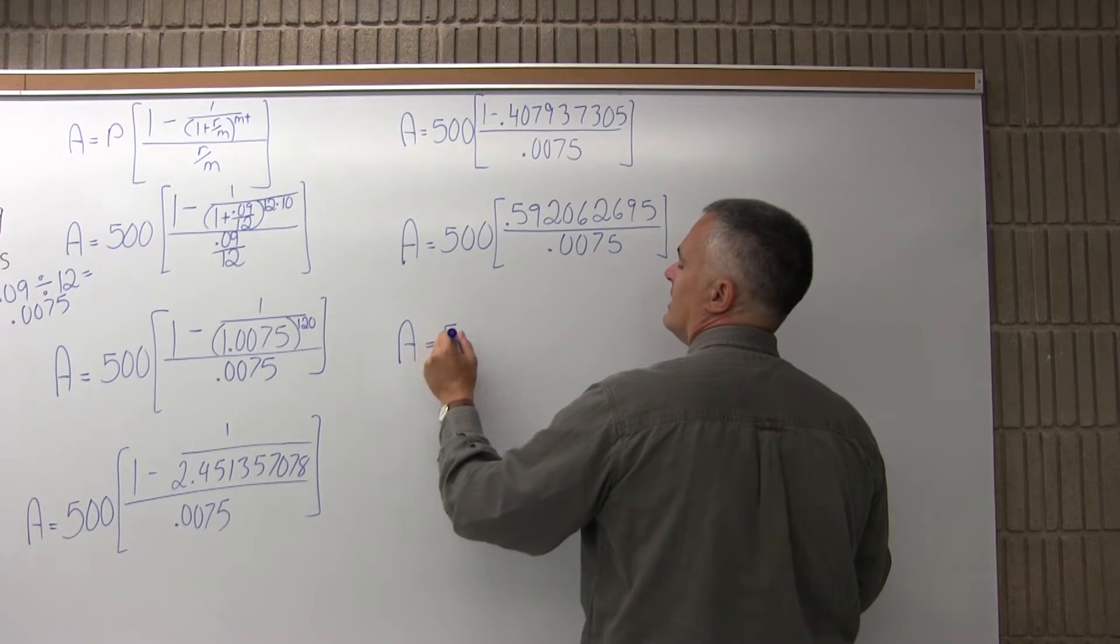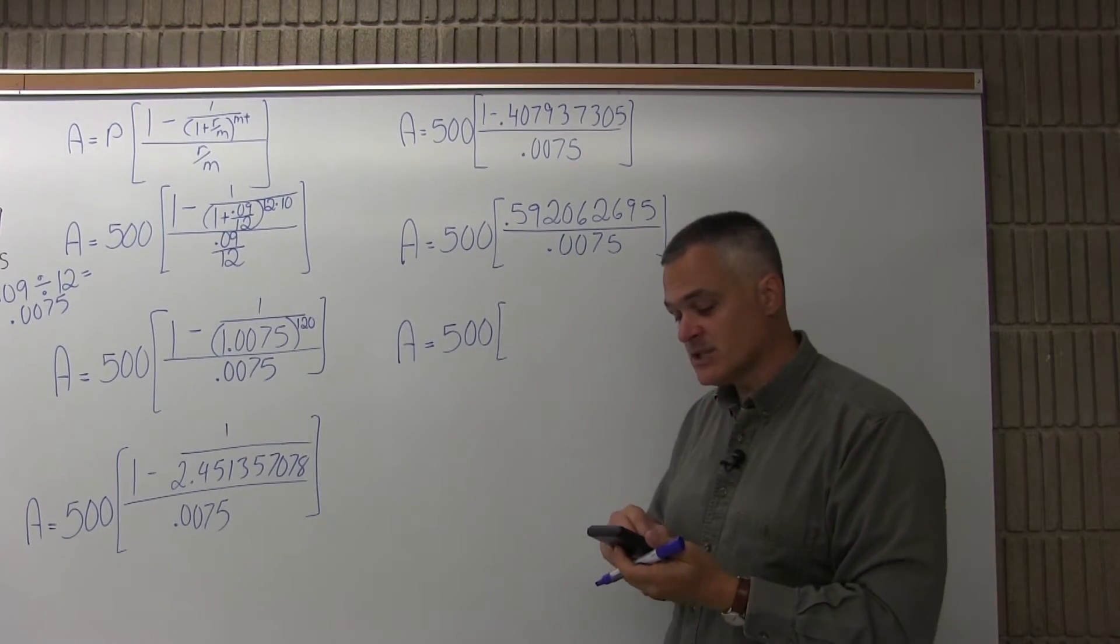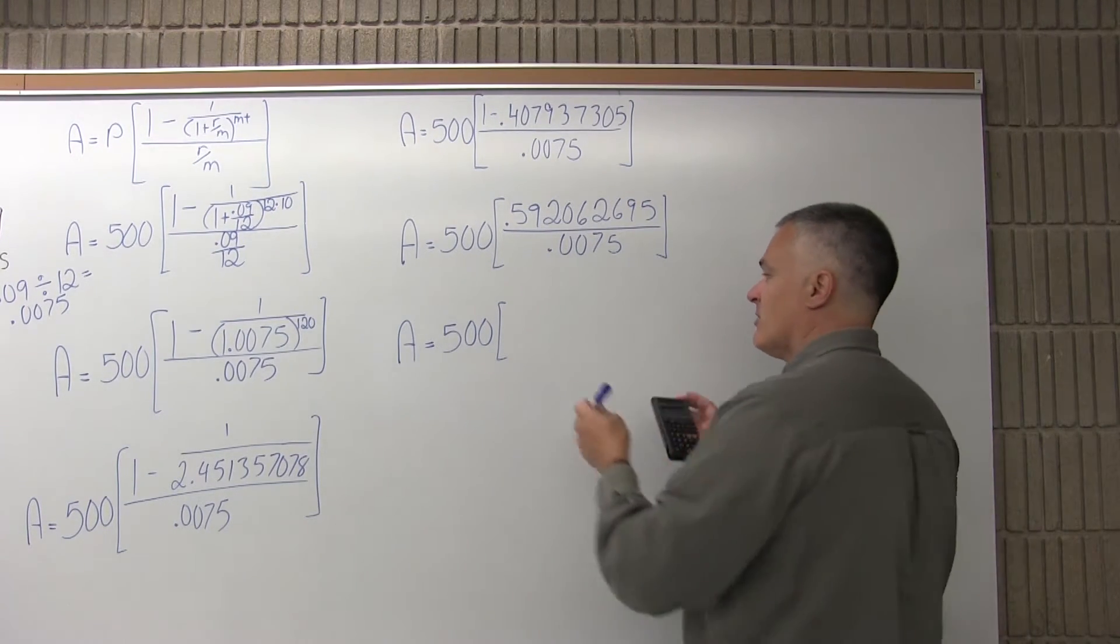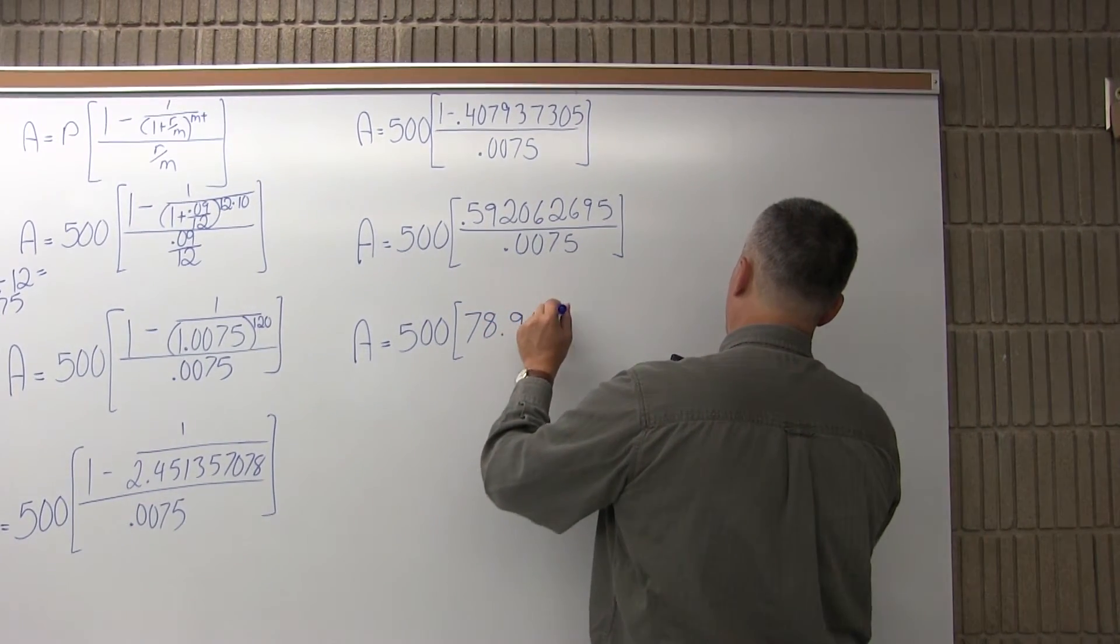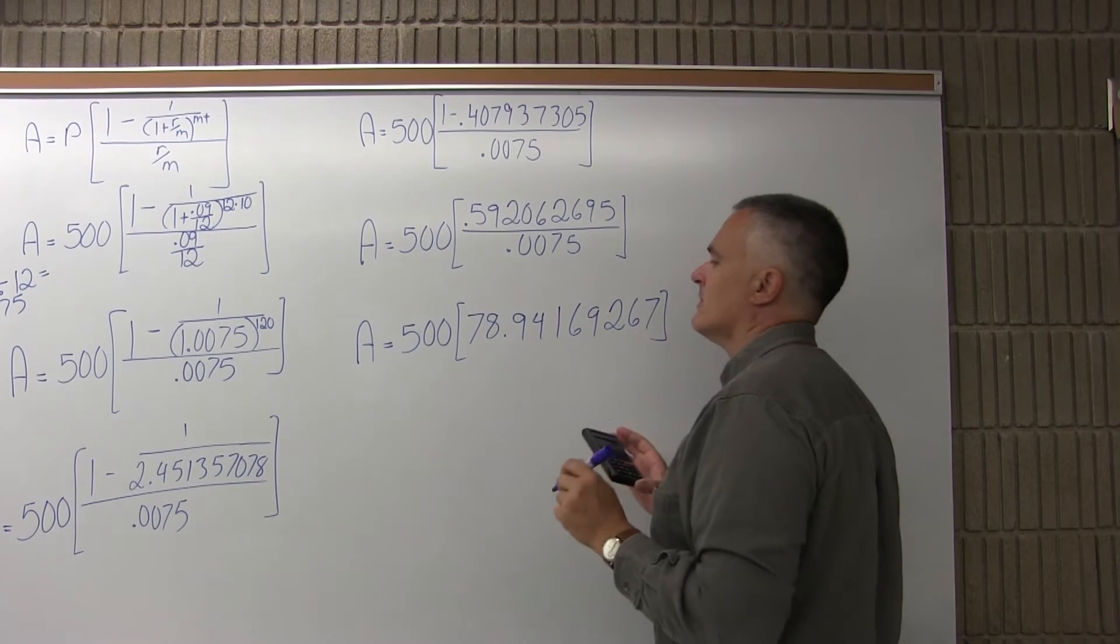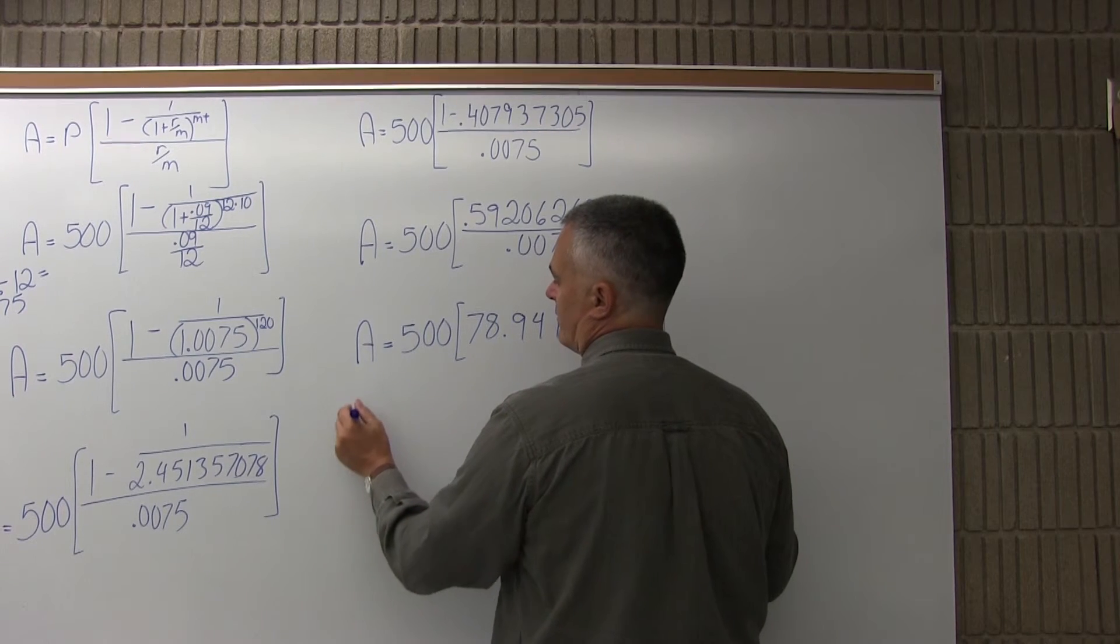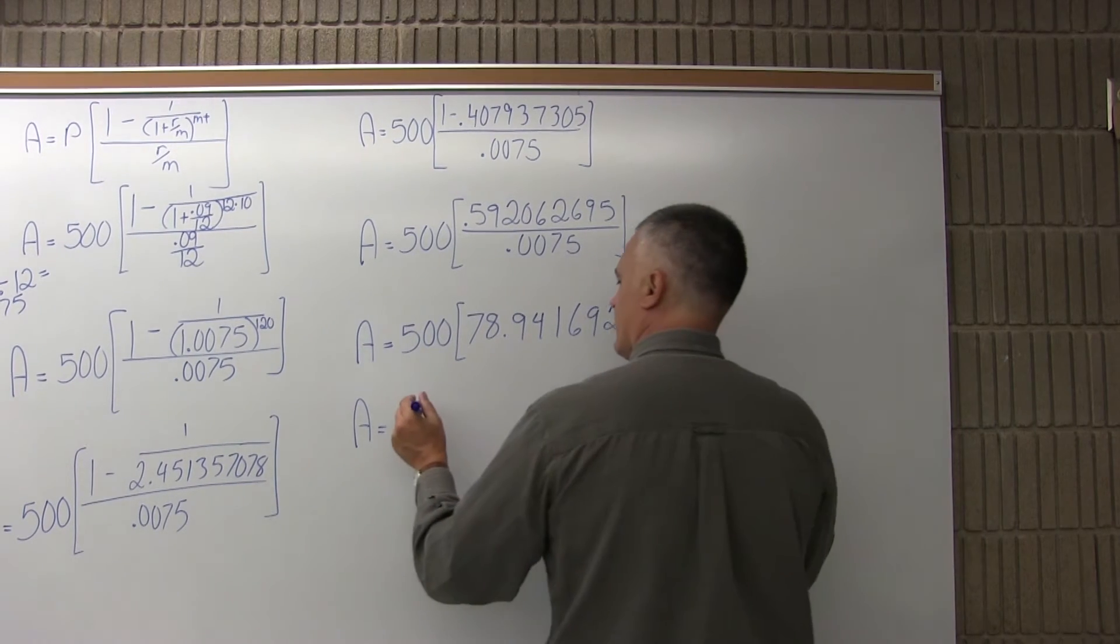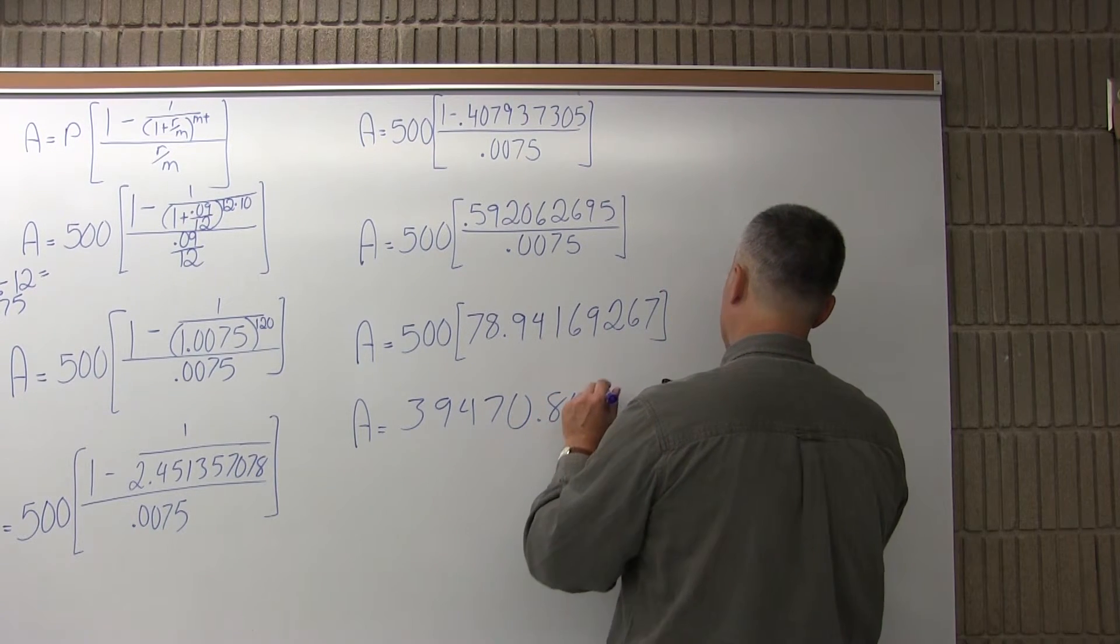So I'm going to have A equals 500 times, and I'm going to divide .592062695, divided by .0075, will give me one value in the brackets, which is 78.94169267. So I'm going to multiply that times 500. The value I've got for the brackets times the 500 in front will give me a final answer of 39470.84633.